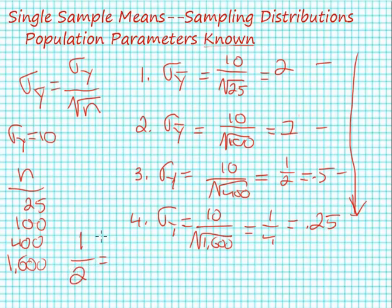And this is a very regular pattern. Every time you increase your sample size by four times—25 to 100 is a four times increase—your standard error is cut in half. So 100 to 400 is a four-fold increase, and 400 to 1,600 is a four-fold increase. And each time, I'm decreasing my error in making estimates by one half.